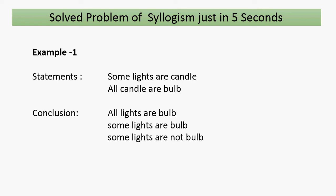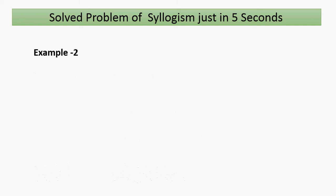Using the trick: if the first statement's first word is 'some' and the second statement's first word is 'all', the conclusion is 'some'. The common word between the two statements is 'candle', which is removed. So the remaining words give us: 'Some lights are burnt.' That is our answer.